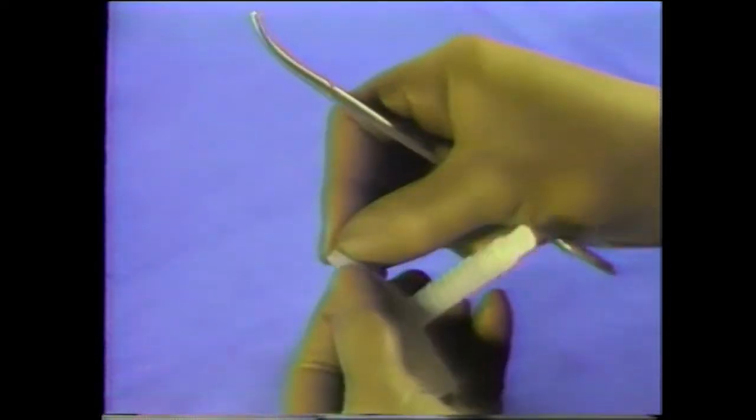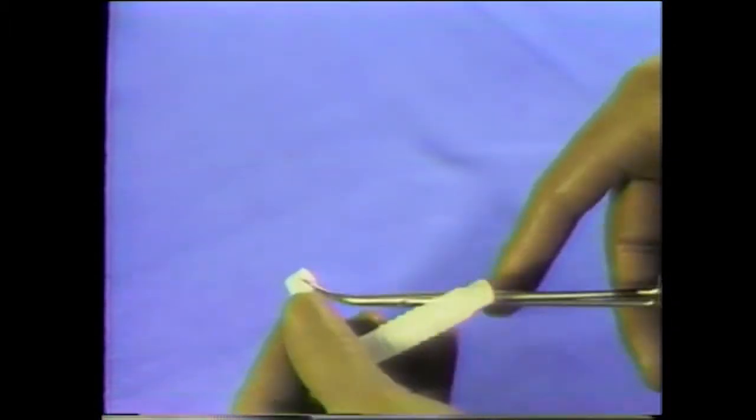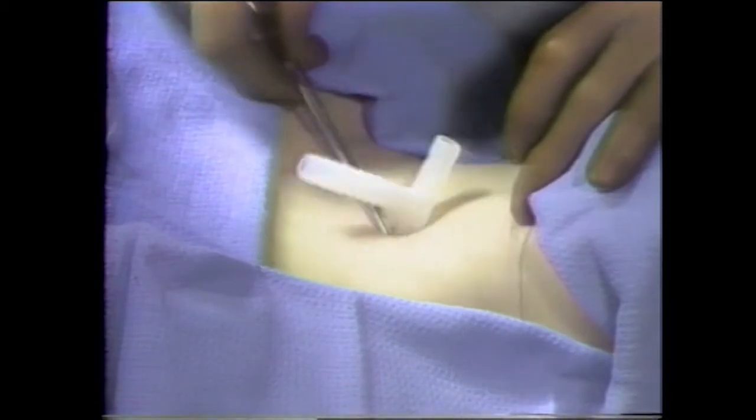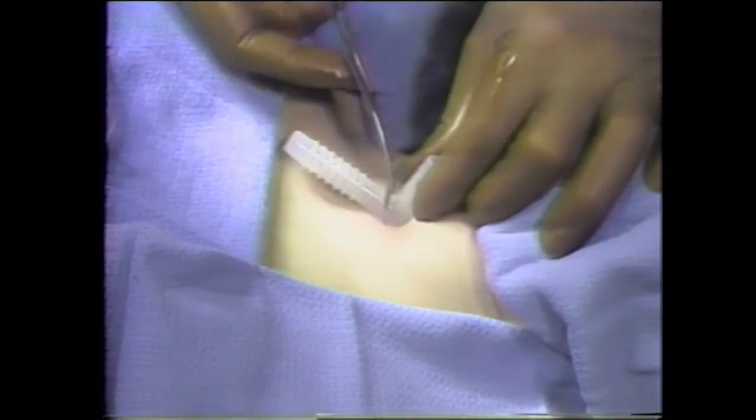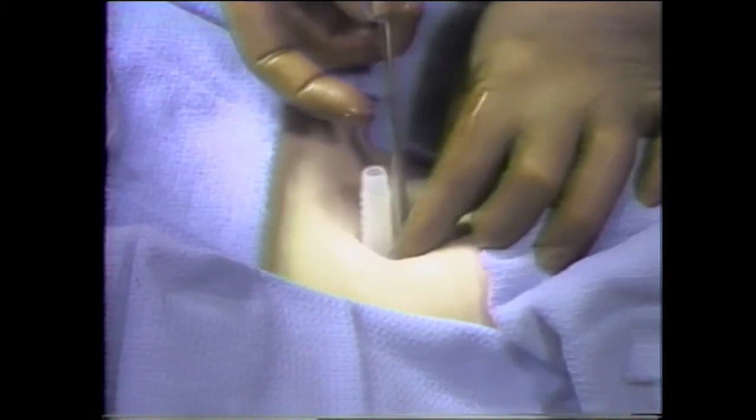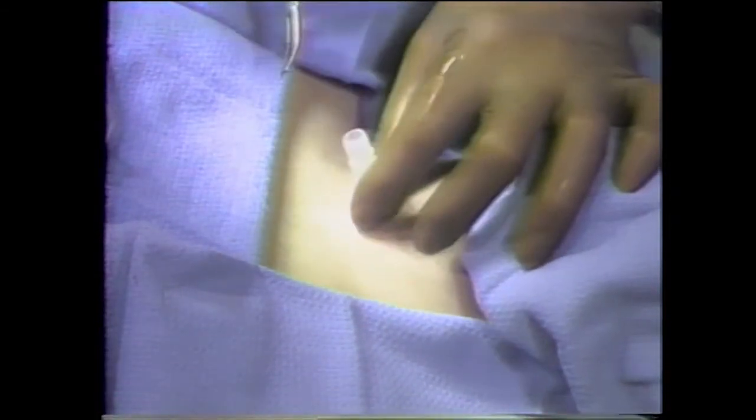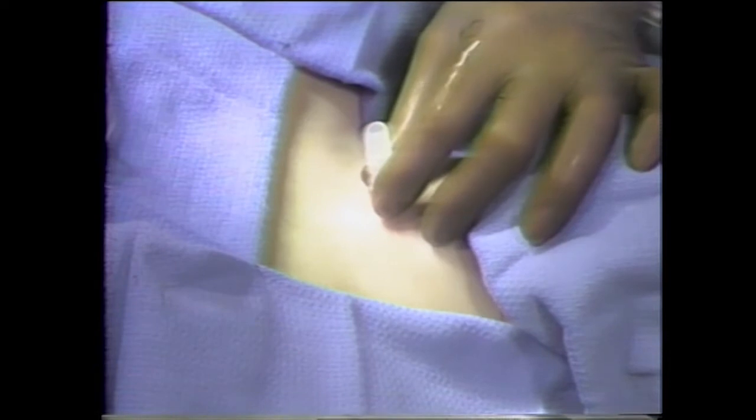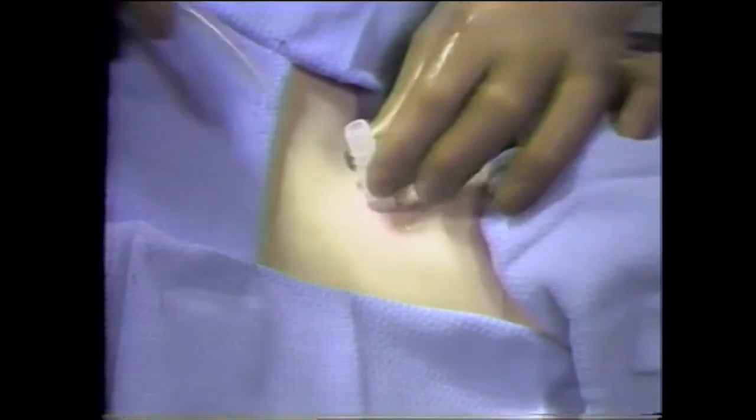The intraluminal portion of the safety tube which is to be directed inferiorly is crimped and grasped with a hemostat. This portion of the safety tube is inserted by way of the tracheotomy. As soon as it is intraluminal the hemostat is released and applied to the opposite intraluminal portion. Once the intraluminal portion is inside the trachea the safety tube is grasped and pulled anteriorly. In so doing the intraluminal portions snap into place.